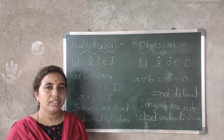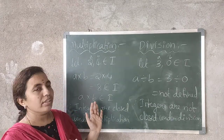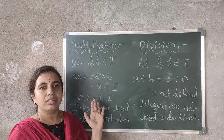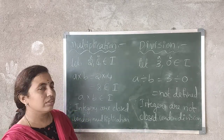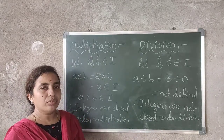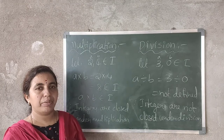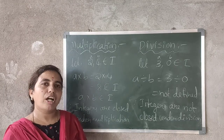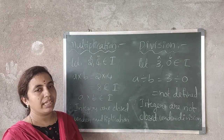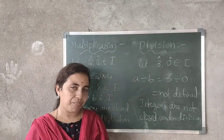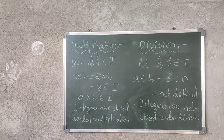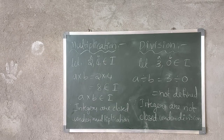So this is about closure property. It is enough for today. Tomorrow I will explain about commutative property, and then we have associative and distributive property.